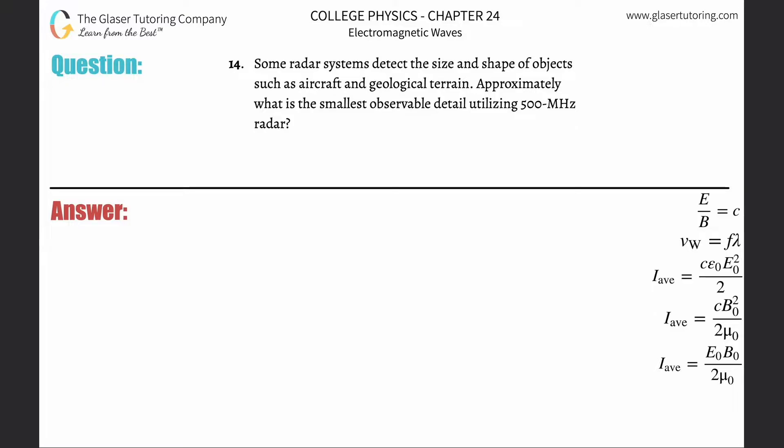Number 14, some radar systems detect the size and shape of objects such as aircraft and geological terrain. Approximately what is the smallest observable detail utilizing 500 megahertz radar?